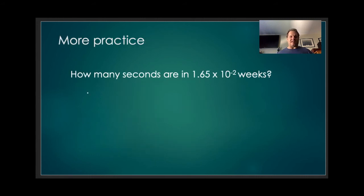Let's take a look at another example. How many seconds are there in 1.65 times 10 to the negative second weeks? So we start with our input value and then obviously this is over one. I'm trying to get to seconds. So I'm going to convert my weeks to days. There are seven days in a week, so I'll put this seven days on top and one week on the bottom. Now my unit weeks, one in the numerator, one in the denominator, they cancel.